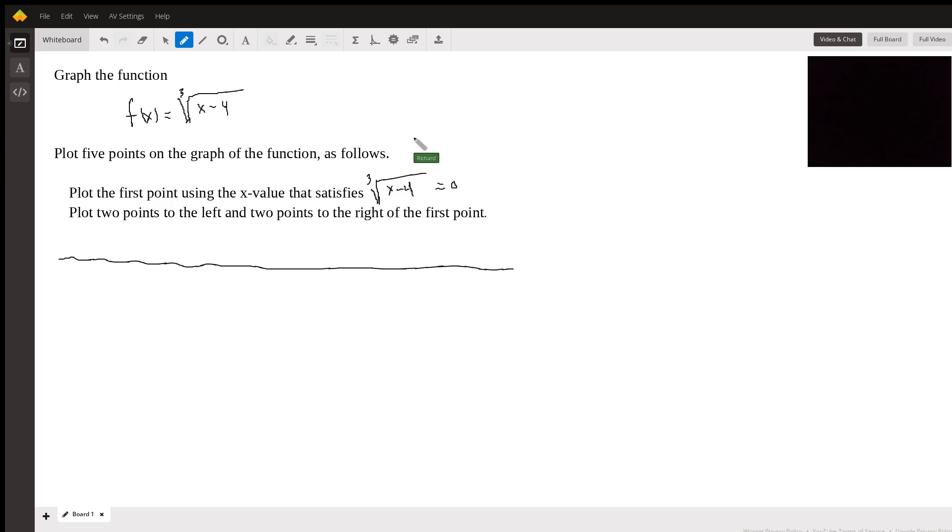They want us to do that by plotting points. There are better ways to do it by hand, and of course this could be done on a graphing calculator, but we're going to go ahead and use the plotting point method. Typically, what I would do is memorize the parent function, which is the cube root function, and then shift it to the right four units. This may be a little beyond where the class is right now, so we're going to just stick with where the student is right now, which is plotting points.